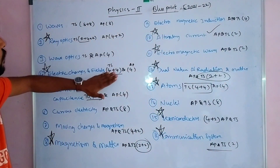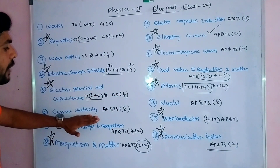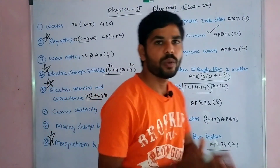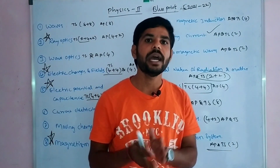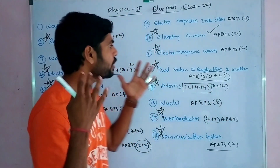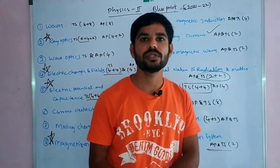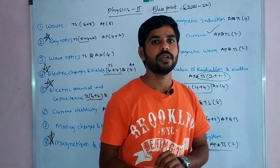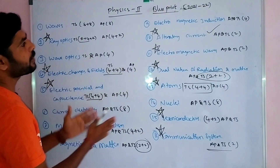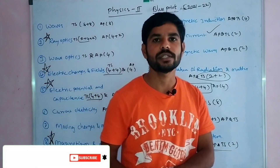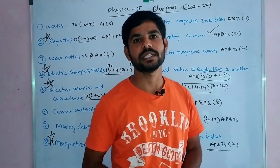We have no problem with weightage in most lessons. Only a few lessons present difficulty. By focusing correctly, we can achieve 60 out of 60 in physics. If you have a tough lesson, focus on the 2-mark questions and important questions. Comment in the comments section and we will definitely help with 2-mark questions. Don't forget to subscribe to the channel. Thank you!